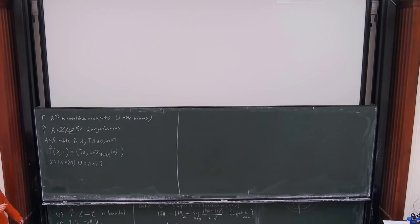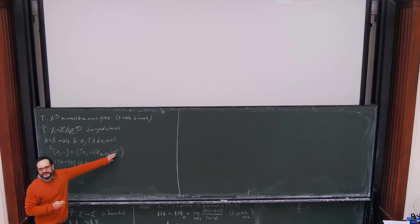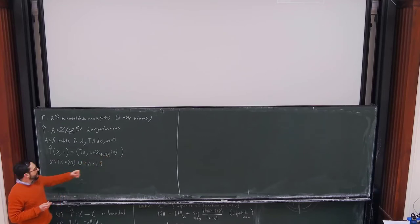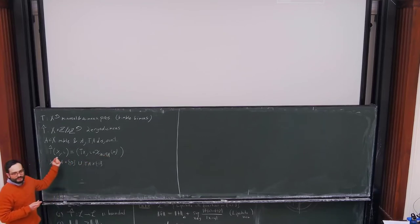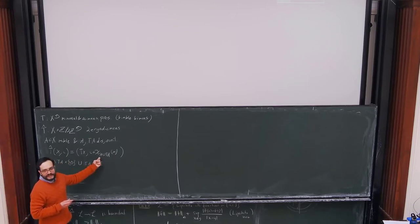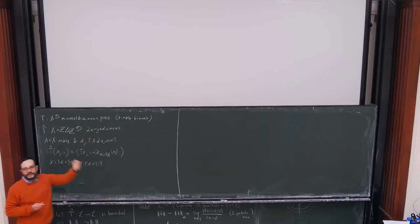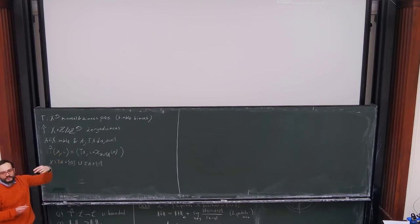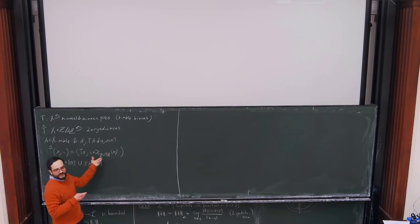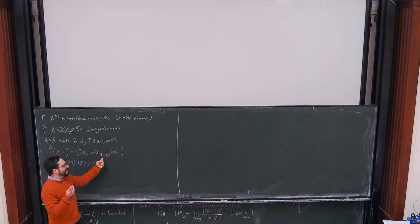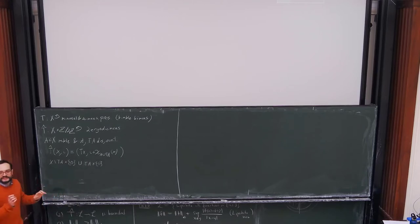It has two ergodic measures, both of which project to being mu when you forget about the second coordinate. Those measures are supported on (X minus T(A)) cross {0} union T(A) cross {1}. The transformation moves according to T on the base doing nothing until you land at A. Then in the next step you move up to the other fiber. If a point is in T(A) or in A, it switches fibers.